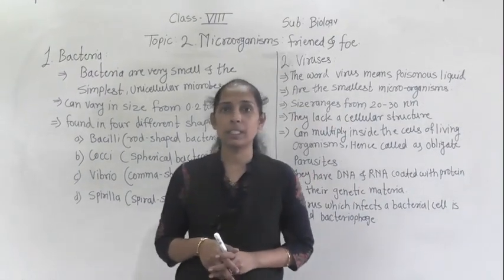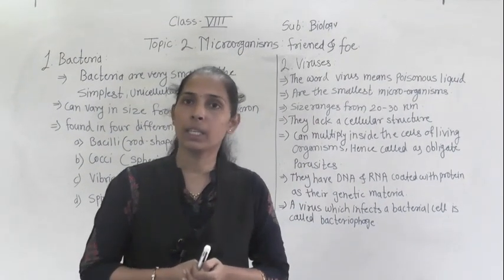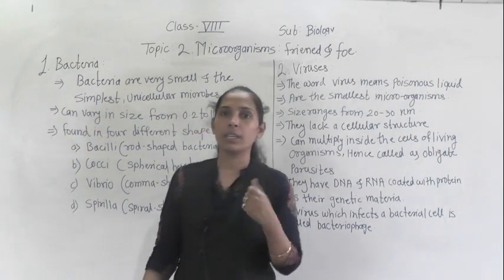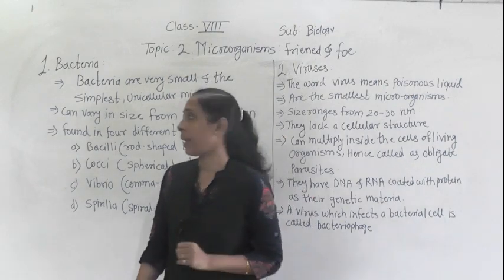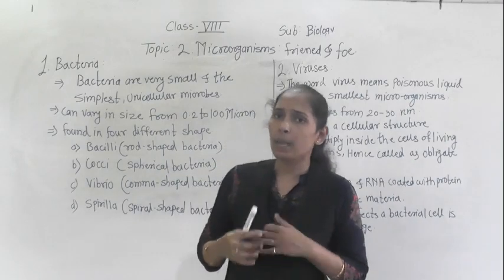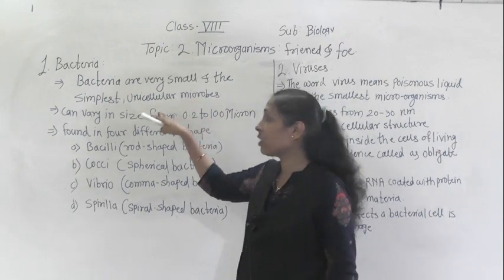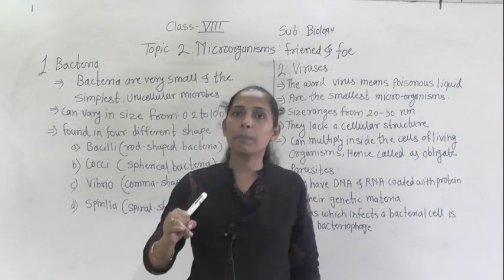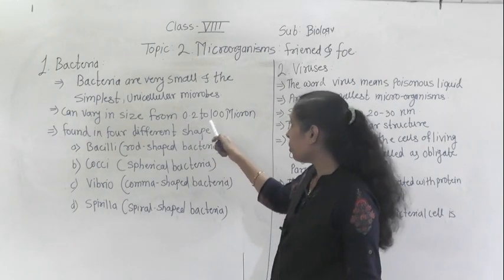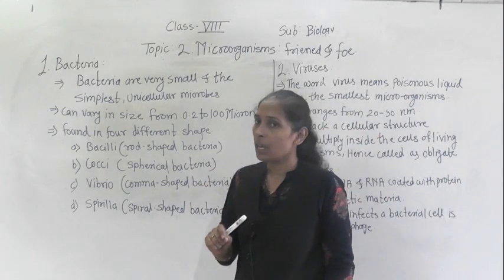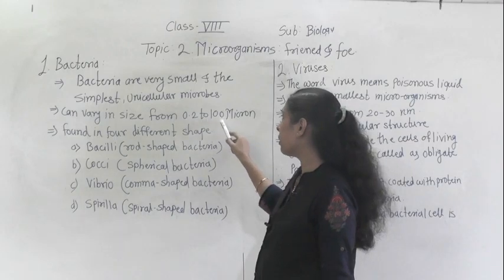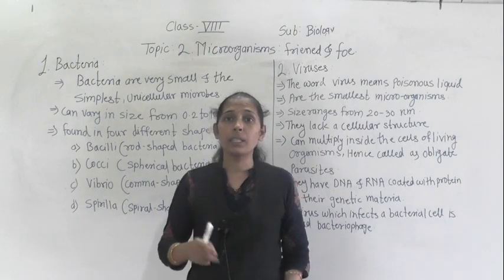Now let's discuss each group deeply. The first group is bacteria — singular: bacterium. Bacteria are very small and the simplest unicellular microbes. They can vary in size from 0.2 to 100 microns. Bacteria can be found in different shapes. The first shape is bacilli — rod-shaped bacteria. Next is cocci — spherical bacteria. Then vibrio — comma-shaped bacteria. And finally spirilla — spiral or coiled-shaped bacteria.